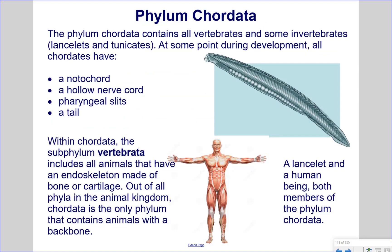Phylum Chordata contains all vertebrates and some invertebrates, such as lancelets and tunicates. At some point during development, all chordates have a notochord, a hollow nerve cord, pharyngeal slits, and a tail. Within Chordata, the subphylum Vertebrata includes all animals with an endoskeleton made of bone or cartilage. Chordata is the only phylum in the animal kingdom that contains animals with a backbone. Pictured here are a human and a lancelet — the human has a backbone, the lancelet does not.